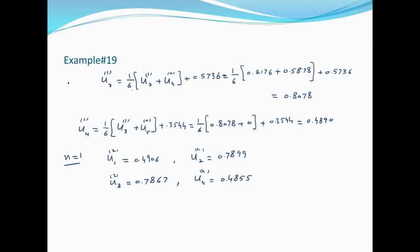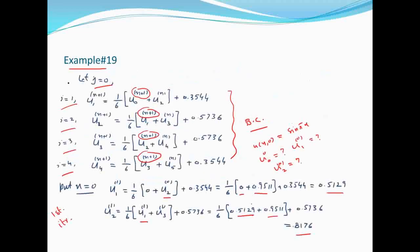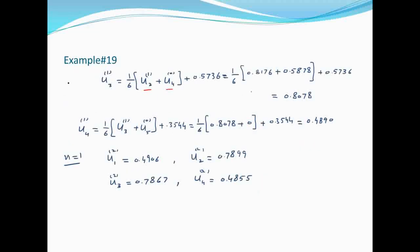u₃₁ calculate करते वक्त u₂ और u₄ की values चाहिए। u₂ की value already calculate हुई है, put कर देंगे। u₄ की value Example 18 से देख लीजिए। यह first iteration आ गई है।